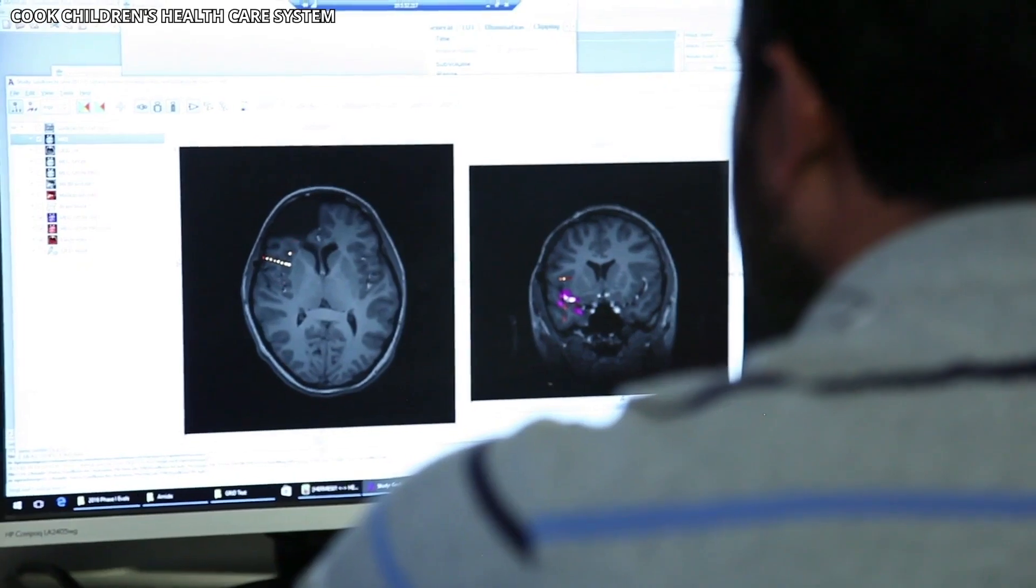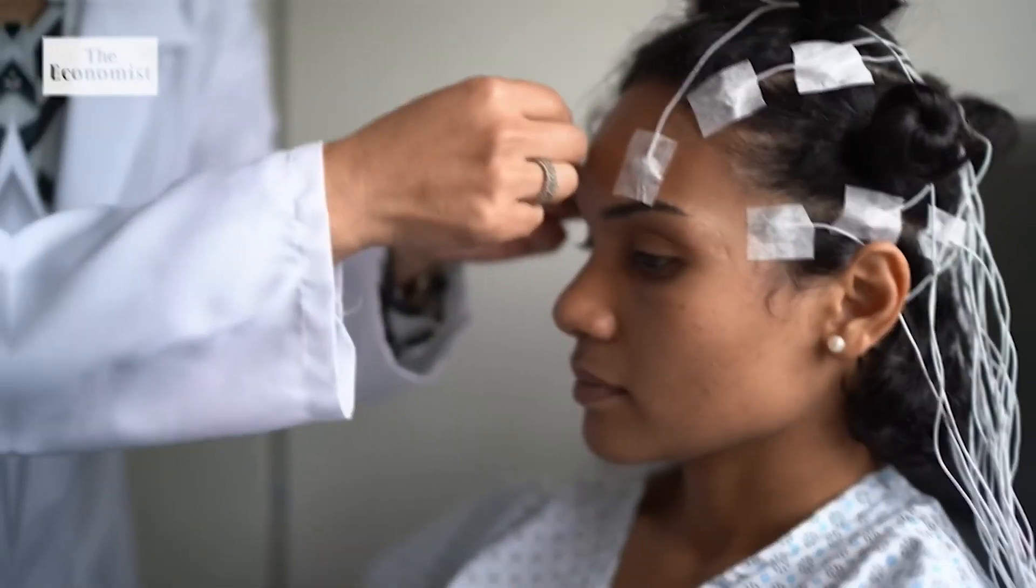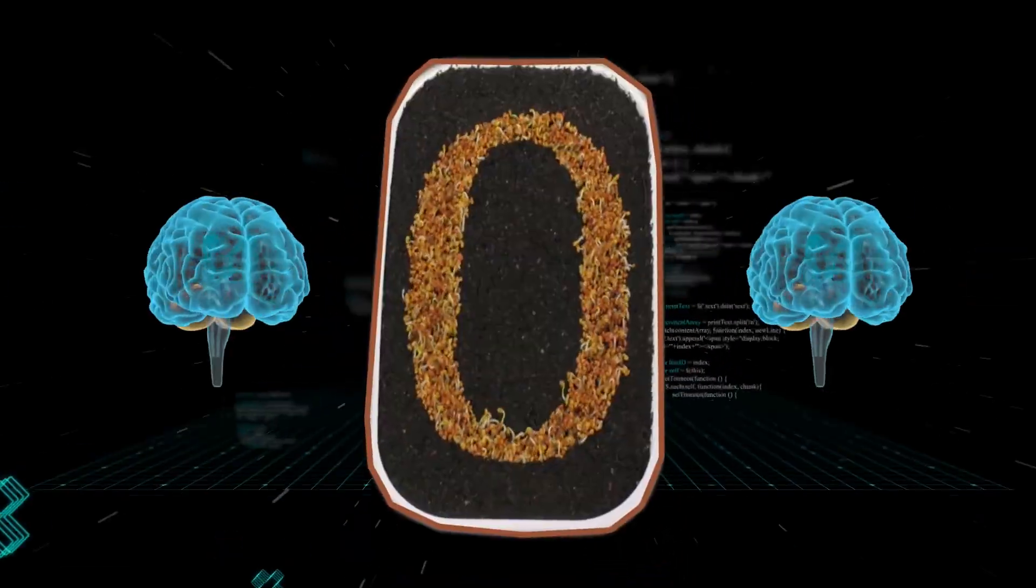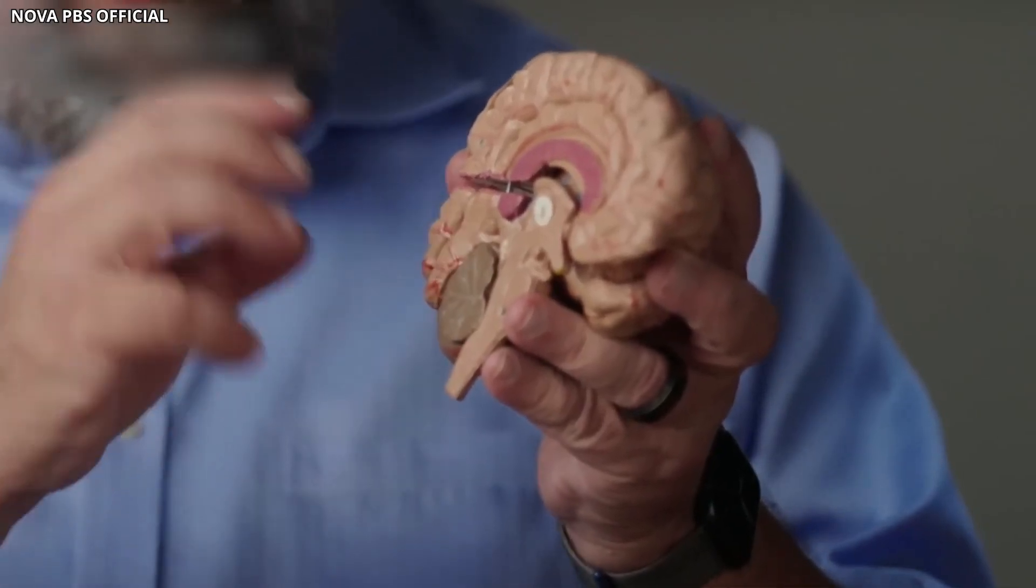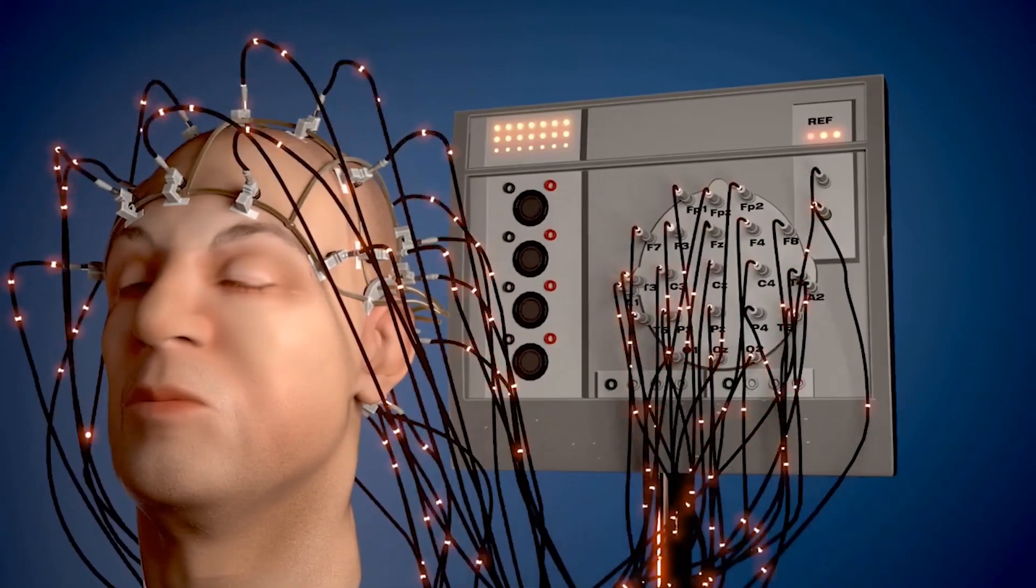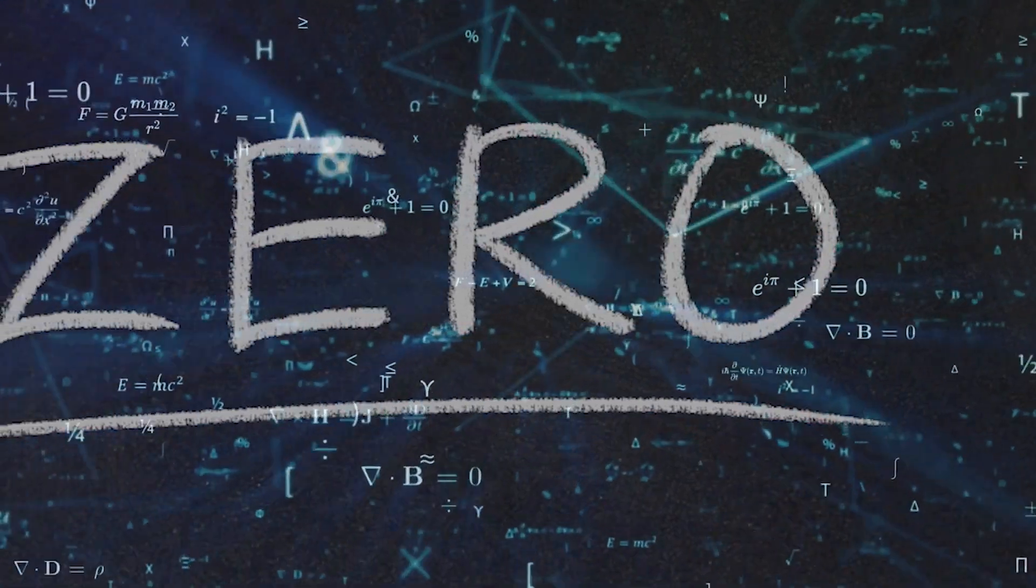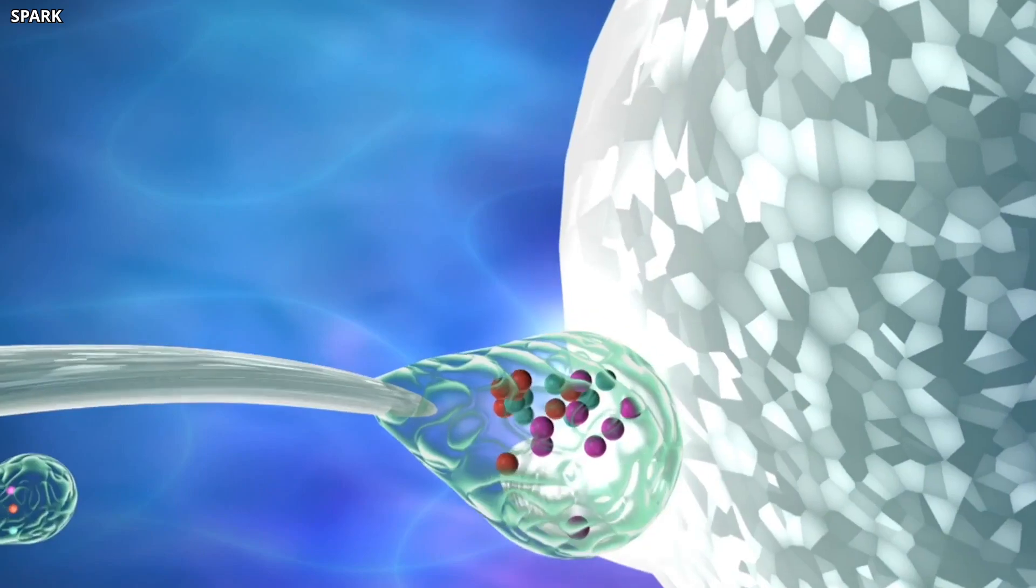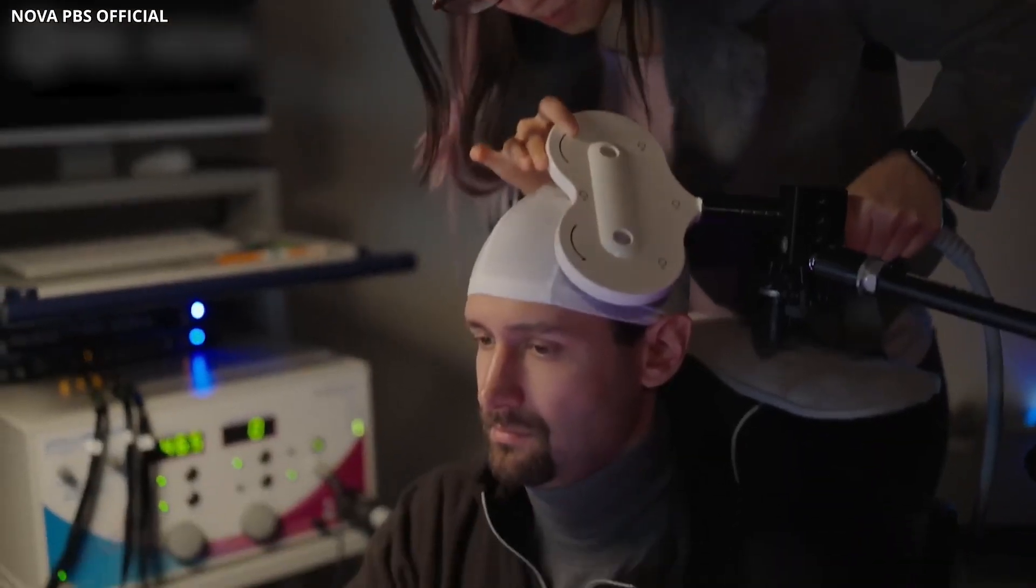Independently, Andreas Nieder and Florian Morman's research, also published in Current Biology, corroborated these findings. Using data from epilepsy patients with implanted brain electrodes, they observed the numerical distance effect for zero. However, their research also highlighted a crucial distinction. More neurons preferentially represent zero than any other small number. This suggests that while zero is processed similarly to other small numbers, its representation is more distinct and accurate, making it an eccentric outlier.